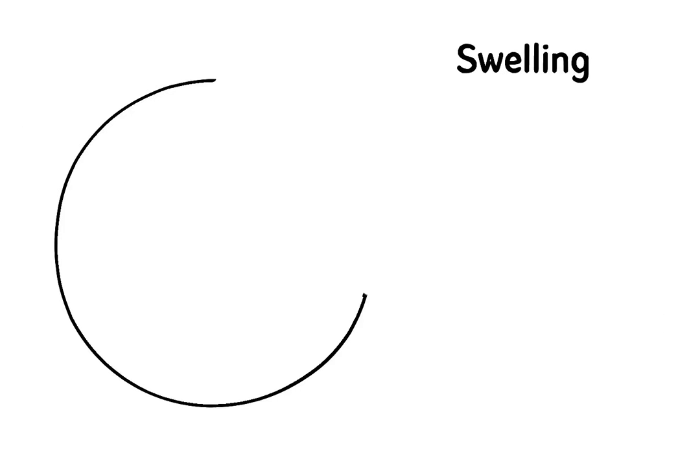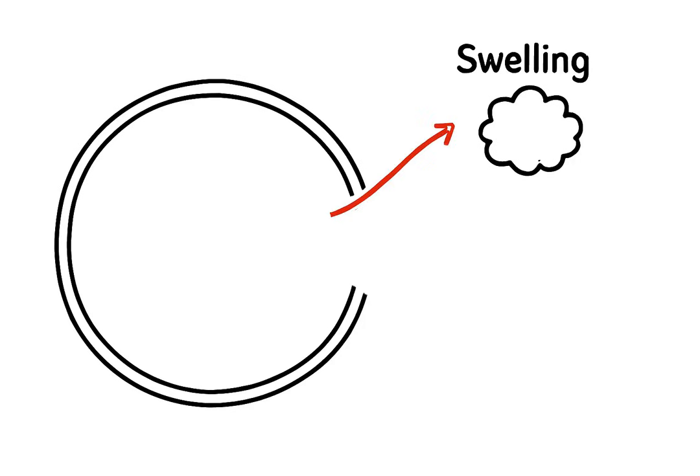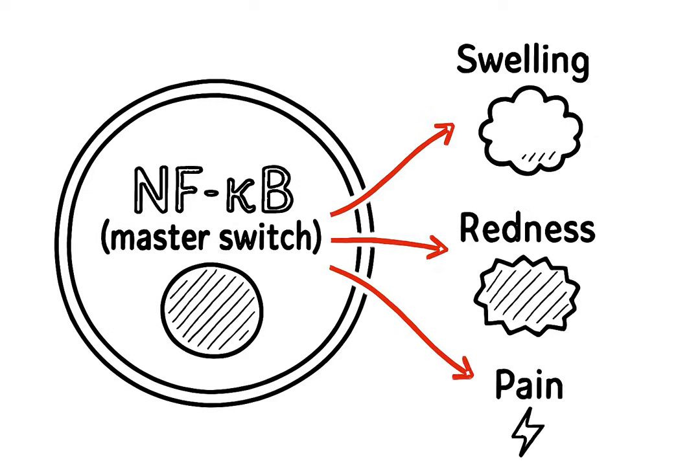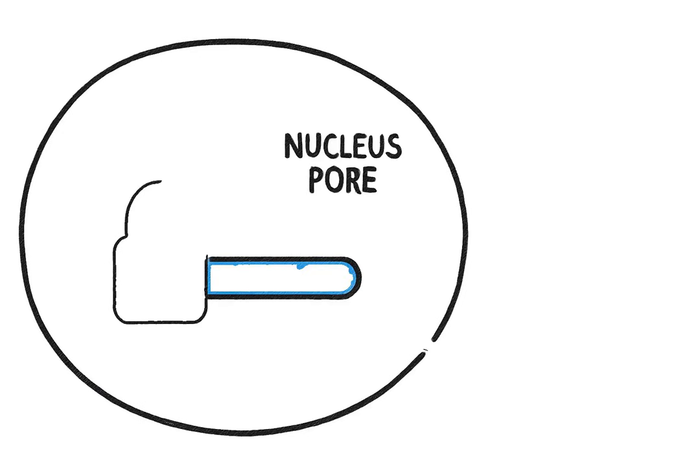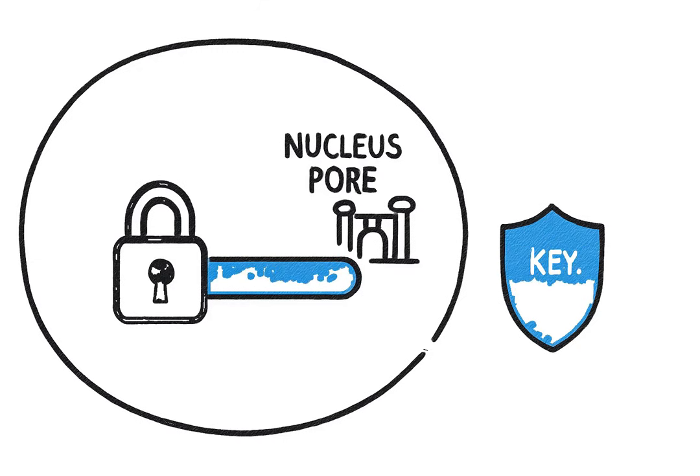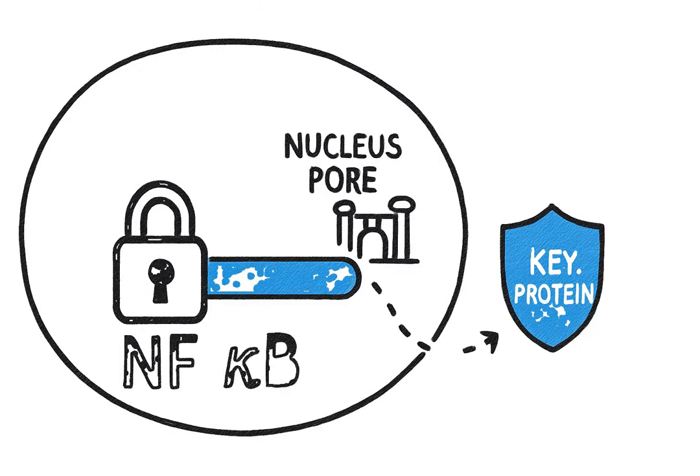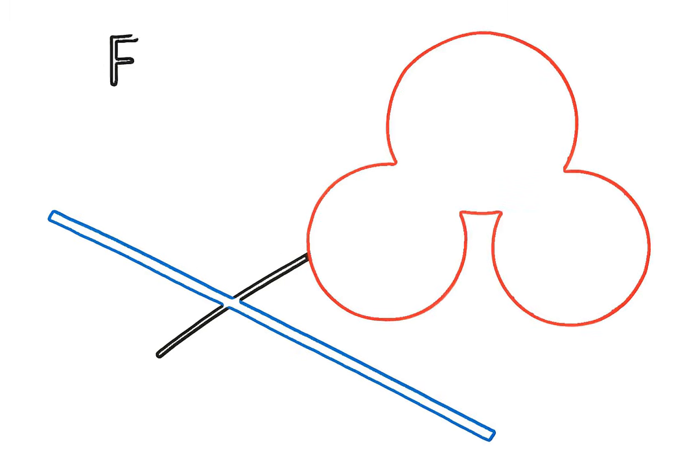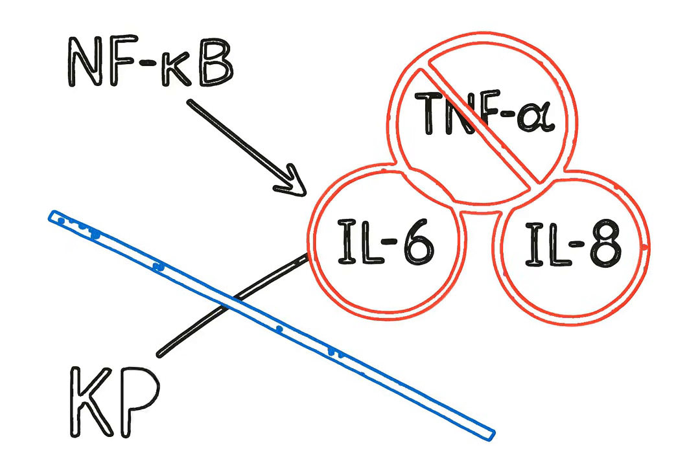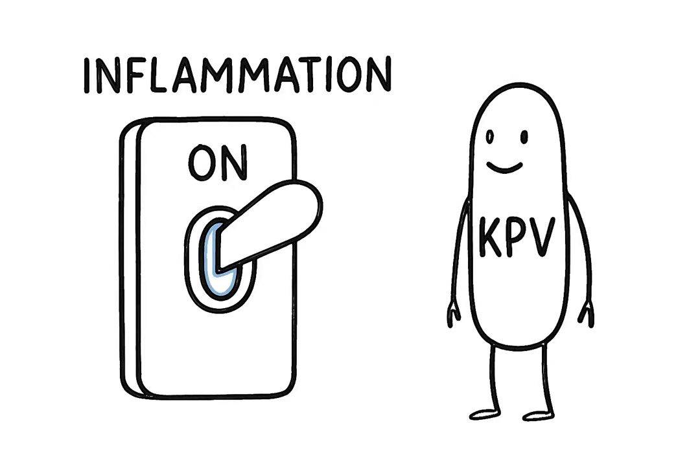Inside your cells is a master inflammation switch called NF-kappa-B. When this switch gets turned on, your body churns out chemicals that cause swelling, redness, and pain. KPV steps in and essentially puts a lock on this switch. It does this by protecting a key protein that keeps the switch disabled, and it physically blocks NF-kappa-B from entering the cell's nucleus, the command center where inflammatory orders are given. This single action prevents the body from making strong inflammatory chemicals like TNF-alpha and interleukin-6 and 8. In simple terms, KPV keeps the main inflammation switch turned off.